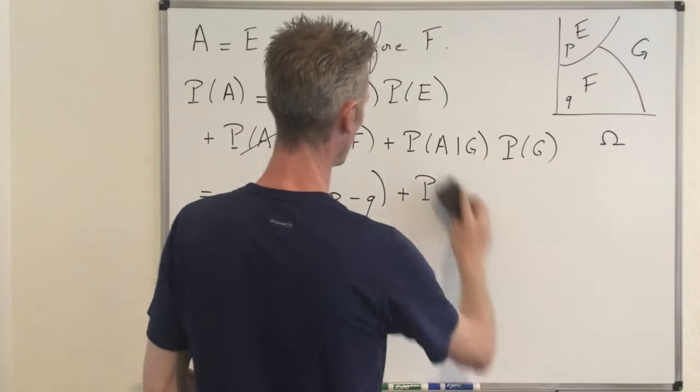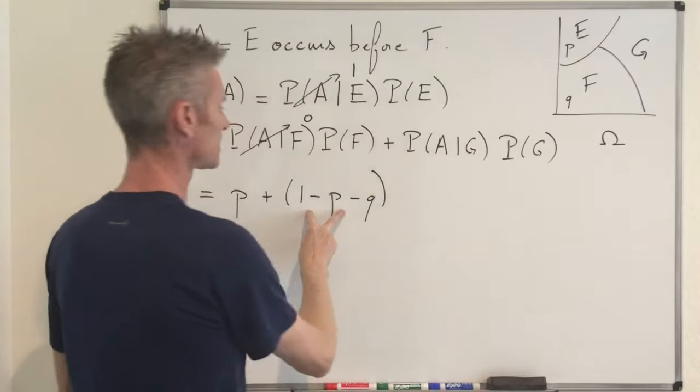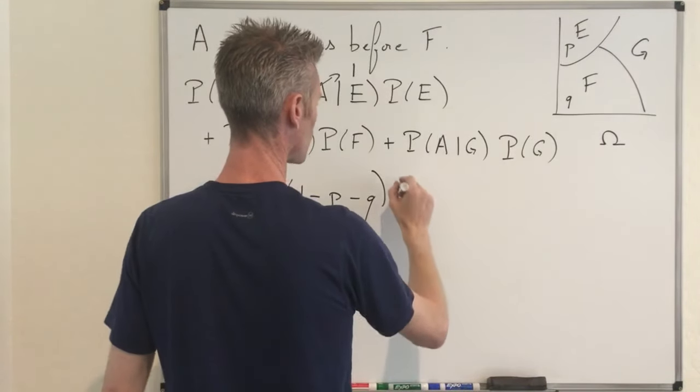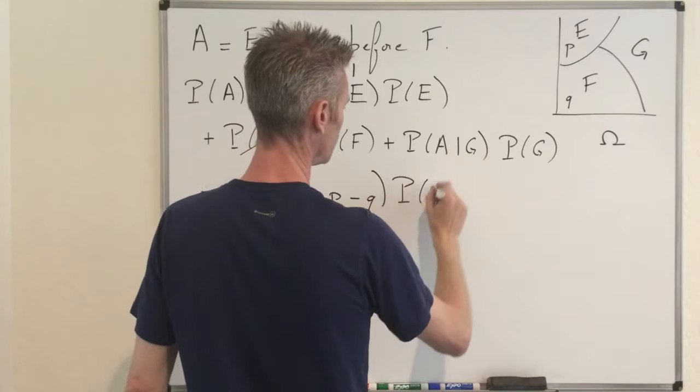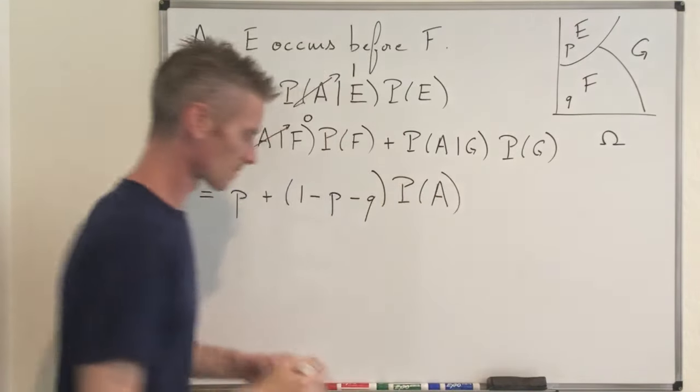So you see P of A given G equals P of A tells us basically is equivalent to the fact that A and G are independent. And indeed, it's clear that if G occurs at step one, then that should not affect the probability that A is going to occur before or after F. So by memoryless, you can restart the process starting from step two and then that tells you that this should be equal to just P of A. So you have P of A here.